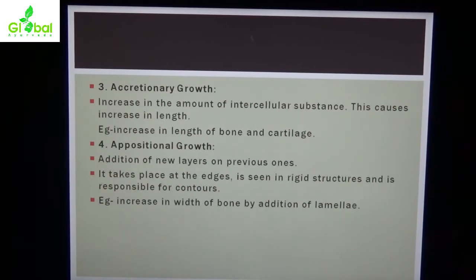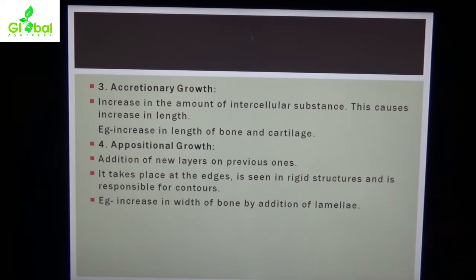The third type is accretionary growth — increase in the amount of intercellular substance. This causes increase in length of bone and cartilage. Intercellular substances badhne lagte hai, aur isse lengthwise growth hoti hai.